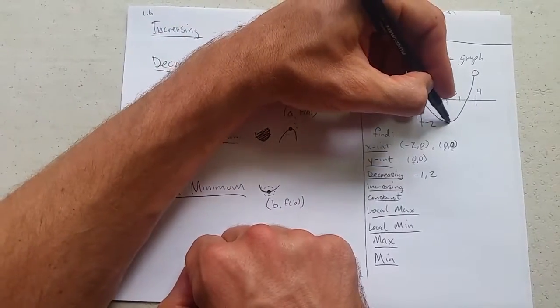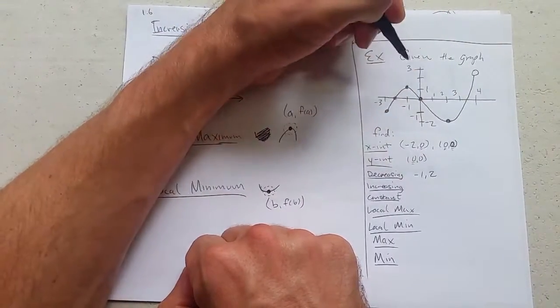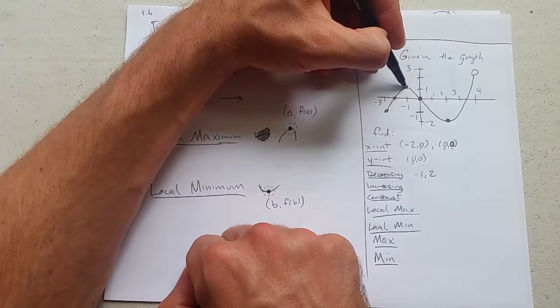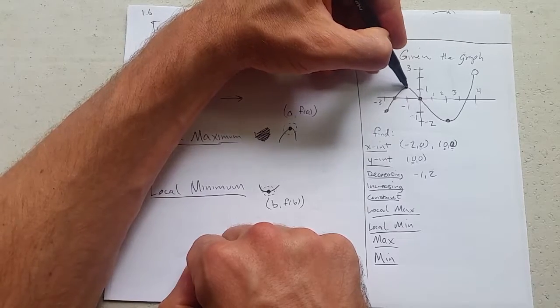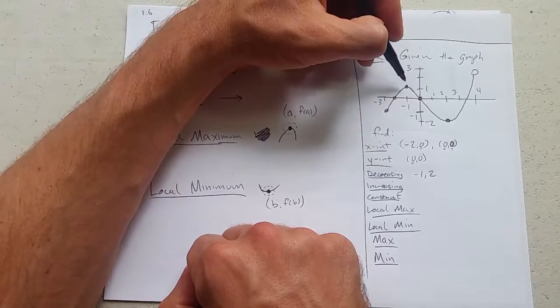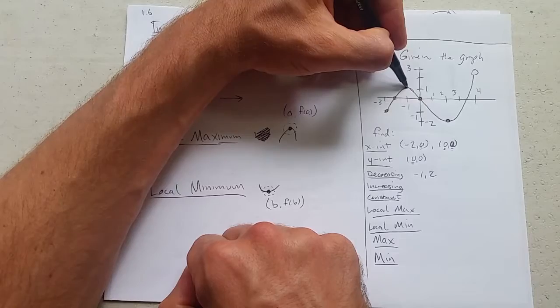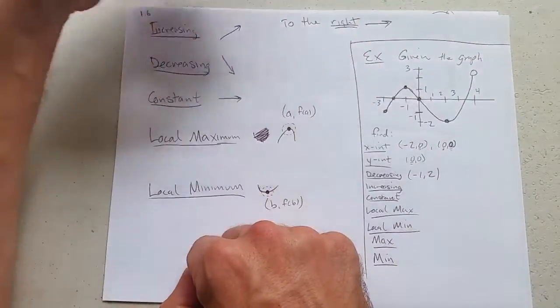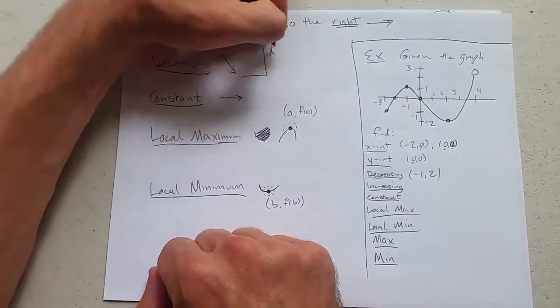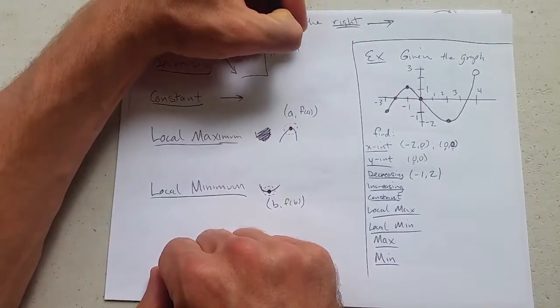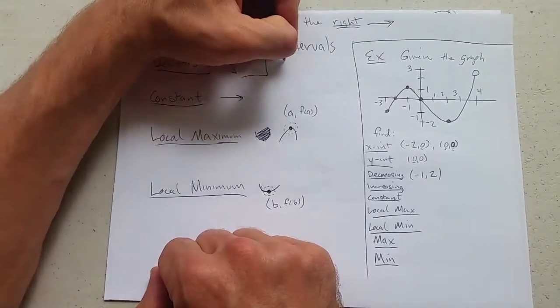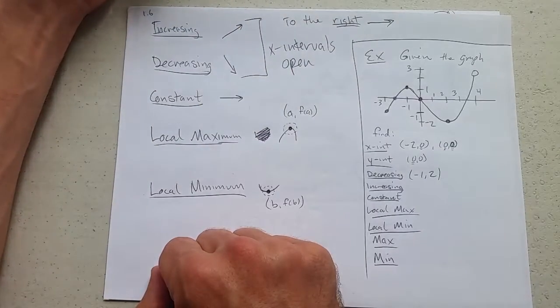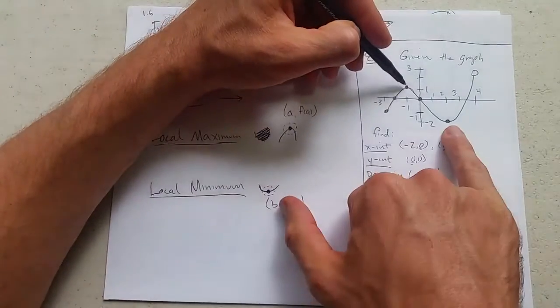At the actual endpoints of this interval, you can't really say are we increasing or decreasing here. Because if you look to the left, we're decreasing, or increasing. If you look to the right, we're decreasing. So what we do is just leave out the actual endpoints. So increasing and decreasing, these are always x-intervals. And they're always going to be open. So we've got decreasing right in the middle.